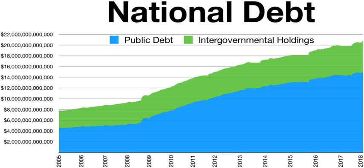The debt ceiling is a legislative mechanism to limit the amount of national debt that can be issued by the Treasury. In effect, it will restrain the Treasury from paying for expenditures after the limit has been reached, even if the expenditures have already been approved and appropriated. If this situation were to occur, it is unclear whether Treasury would be able to prioritize payments on debt to avoid a default on its debt obligations, but it would have to default on some of its non-debt obligations.